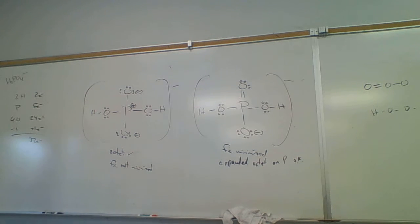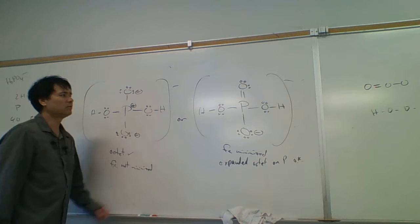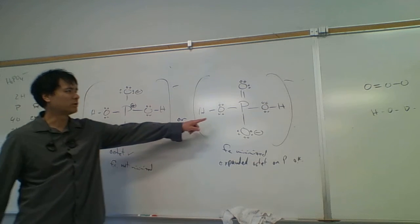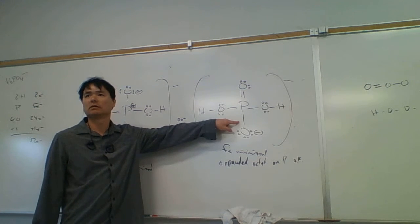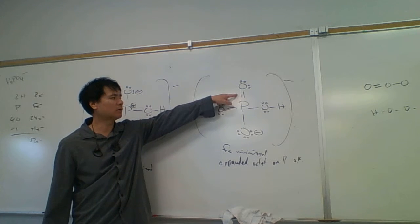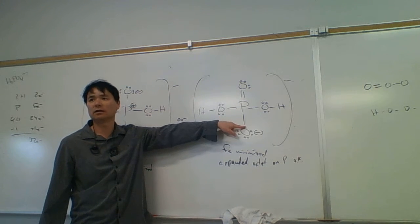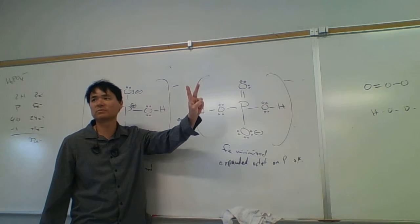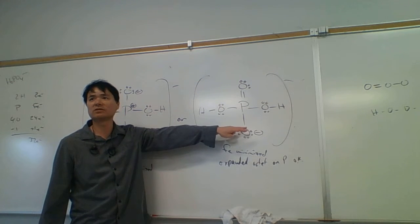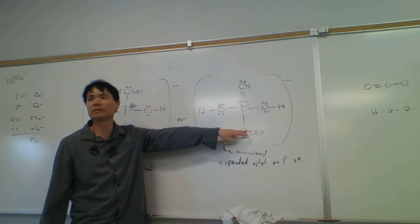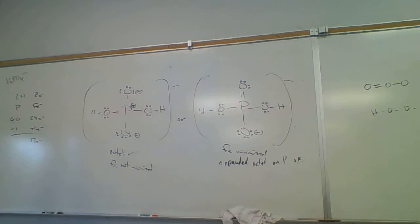How many resonance forms would there be for this? We could have made the double bond to the top oxygen or to the bottom oxygen, so there are two resonance forms: one with the double bond up here and another with the double bond down here.